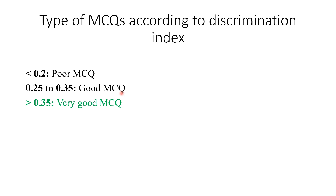Based on the discrimination index: if it is less than 0.2, it is a poor MCQ — meaning it cannot discriminate a bright student from a weak student. If the discrimination index is between 0.25 and 0.35, it is a good MCQ. If it is more than 0.35, it is a very good MCQ. In the present example, the discrimination index is 0.4, so it is a very good MCQ.